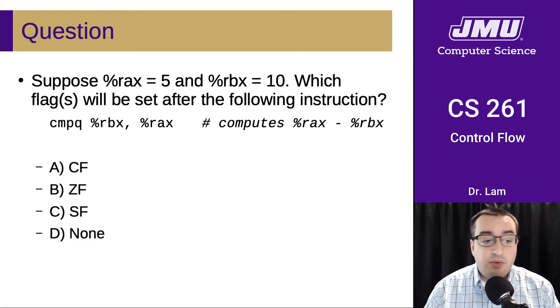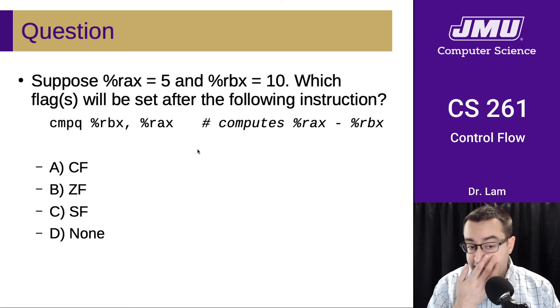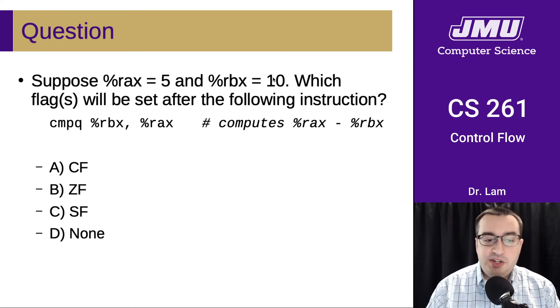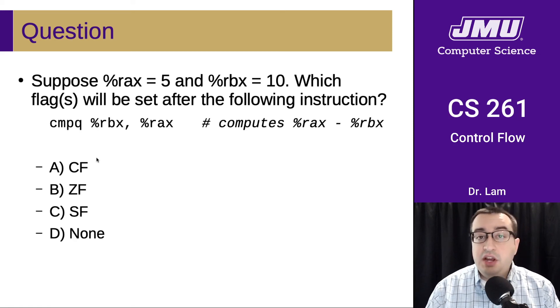Here's the next question and a very subtle difference. I just flipped the order of these two operations. So rather than subtracting RAX from RBX, this is subtracting RBX from RAX. Now we don't have enough value here in order to do the subtraction, so we're going to have to borrow in. That means that the carry flag is going to be set. The result is still not going to be zero.